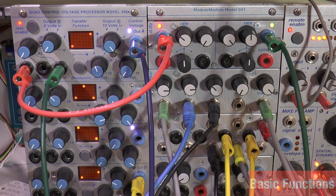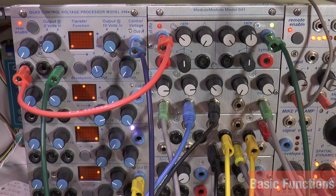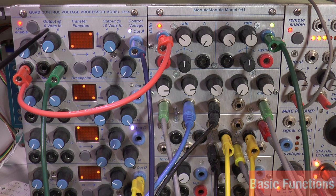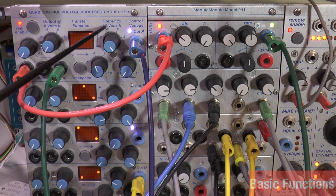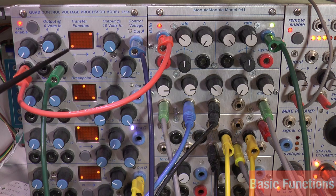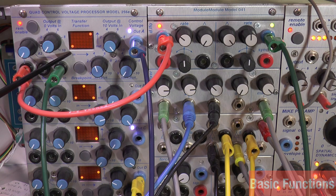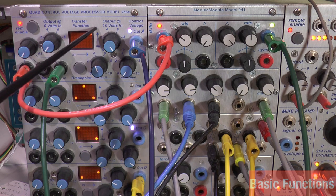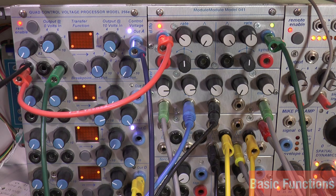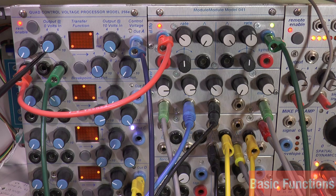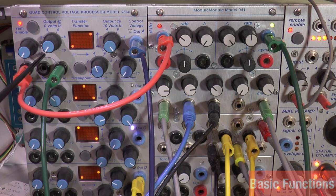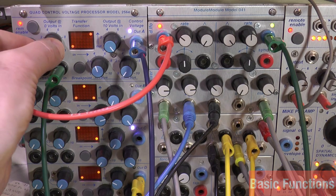Now it's actually a pretty simple and straightforward module. To understand it, you just need to look at the legending on the top most channel, channel A. It's the only one where it's written: output at zero volts in and output at 10 volts in. So this is the input from zero to 10 volts, and this is the output from zero to 10.